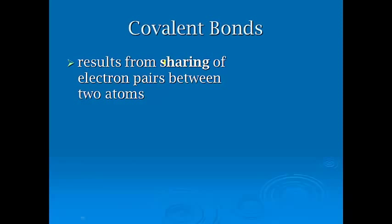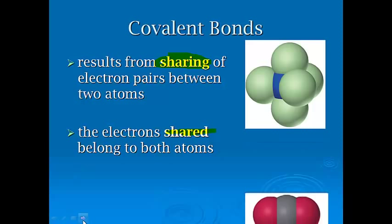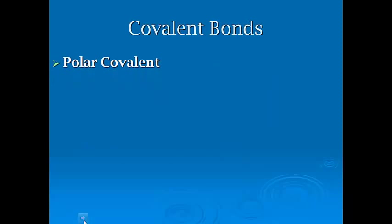Covalent bonds result from the sharing of electron pairs between two atoms. The electrons shared technically belong to both atoms. Here are just some diagrams of what some of this looks like, where you show these ball and stick figures with electrons floating around between atoms that overlap. They don't always share equally.